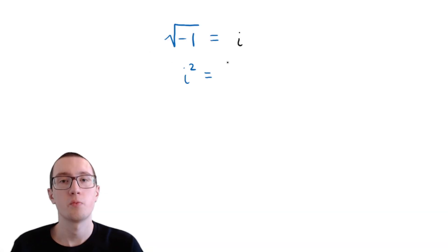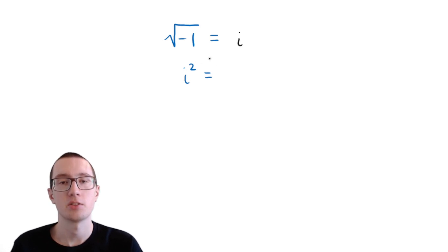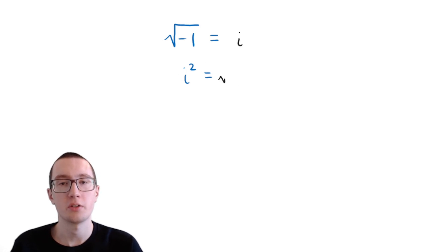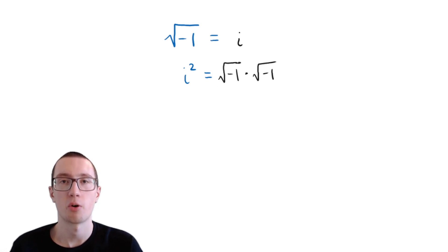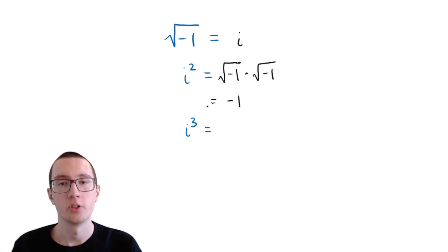For example, what if we had i squared — i times i? Well, i is the square root of negative 1. So we're going to have the square root of negative 1 times the square root of negative 1. If you multiply a square-rooted number by itself, the square roots cancel out. So you just end up with negative 1.